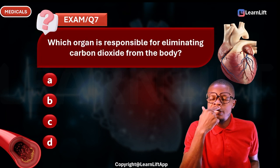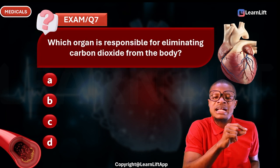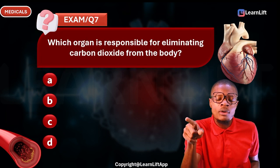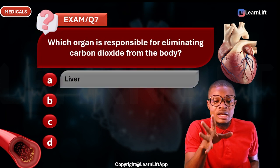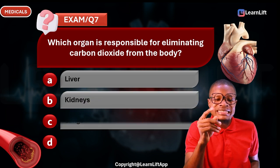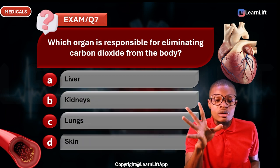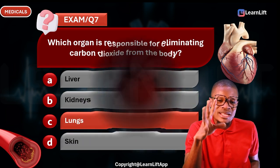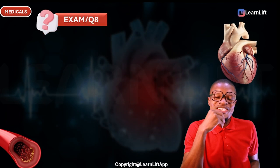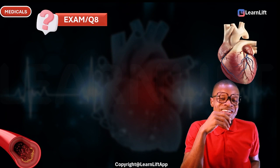Question seven: Which organ is responsible for eliminating carbon dioxide from the body? The options are liver, kidney, lungs, and skin. Of course, the answer is the lungs.